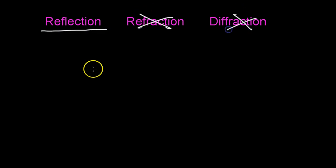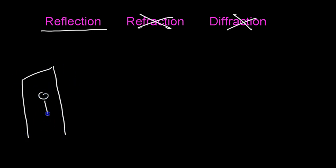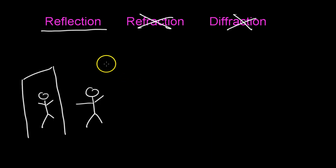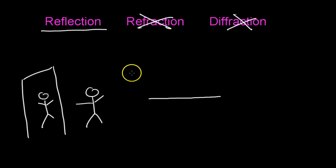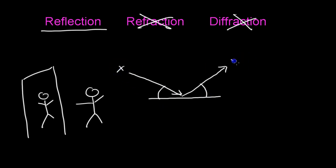The first one we'll talk about is reflection. Reflection is the easy one that I'm sure you'll recognize — where you look in a mirror and you see yourself. That's because light reflects; it bounces off objects. For example, if we have glass on the floor and we shine a light on it, it's going to reflect at the same angle. So if you're standing here looking at a mirror, you can see somebody over there, and they can see you because of that bouncing reflection.